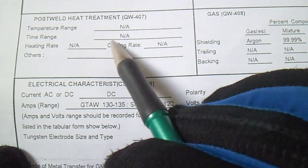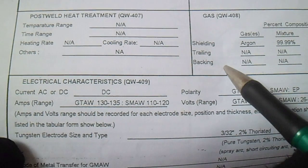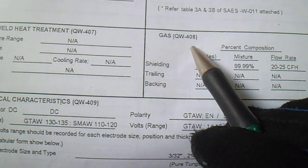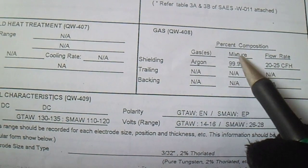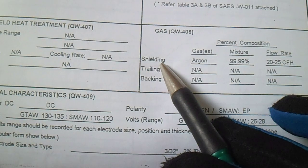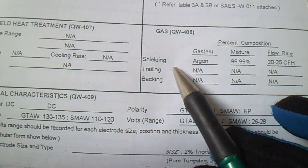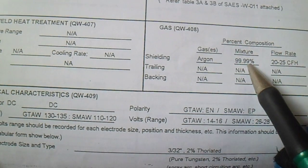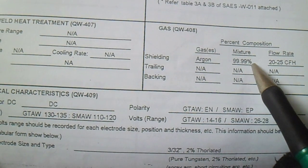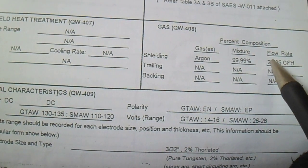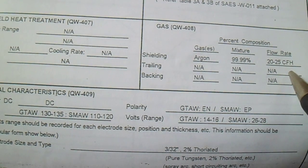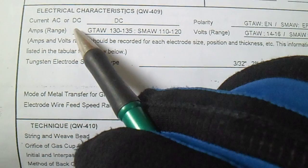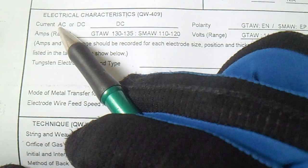Post weld heat treatment is NA — not applicable. For shielding gas, they use Argon at 99.99% purity. The flow rate is 20 to 25 CFH for shielding, with trailing and backing also specified.